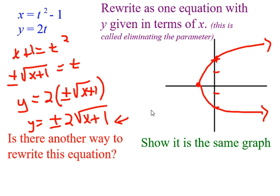We could also solve, and I think it would be easier this way, is to solve my y equation for t. Okay, so if I start with y equals 2t, then t is y over 2.